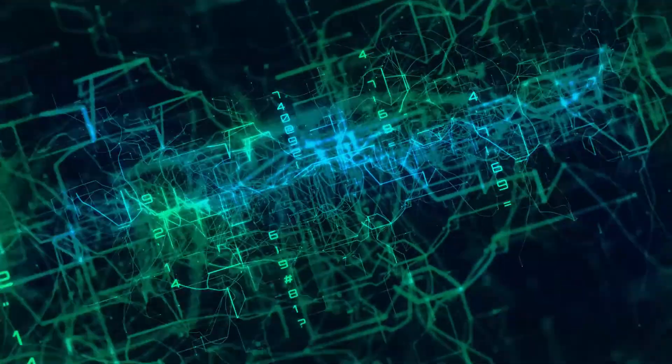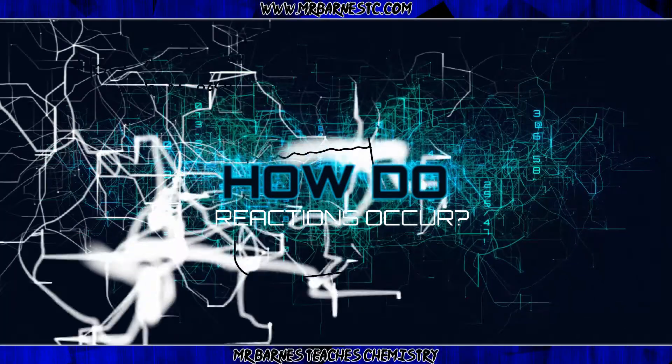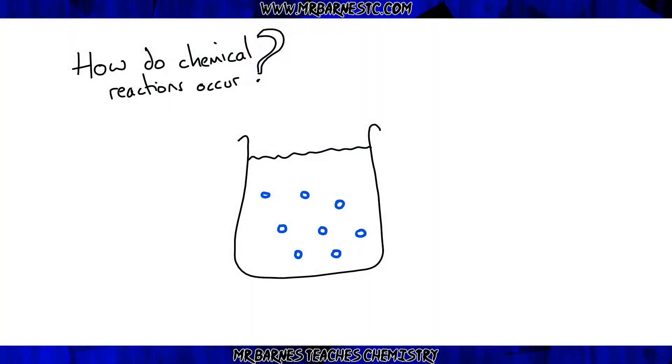Hi guys, welcome to this short video looking at how reactions occur. If I start off with two different reactants, I've got my blue reactant A and my red reactant B here.